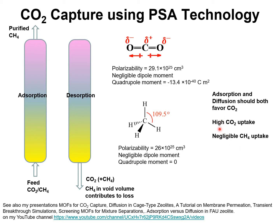High adsorption capacity for CO2 is realized by relying on the differences in the properties of CO2 and methane. CO2 has a higher degree of polarizability and a large quadrupole moment. The polarizability of methane is lower and it has zero quadrupole moment. Therefore, strong adsorption of CO2 is achieved by relying on the electrostatic interactions between CO2 and extra framework cations in zeolites such as 13X zeolite, or with unsaturated metal atoms of metal organic frameworks.